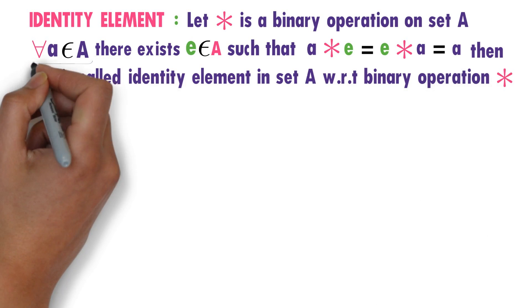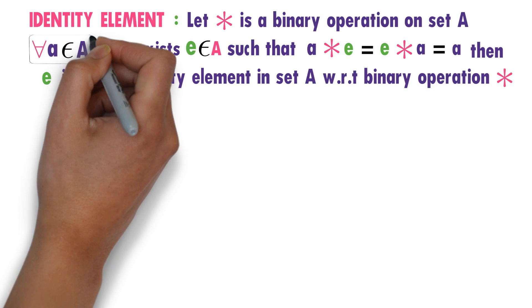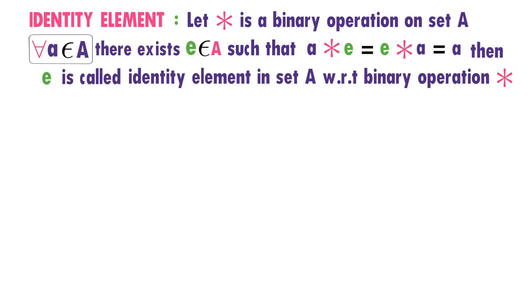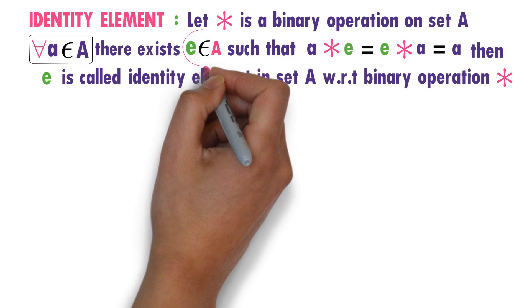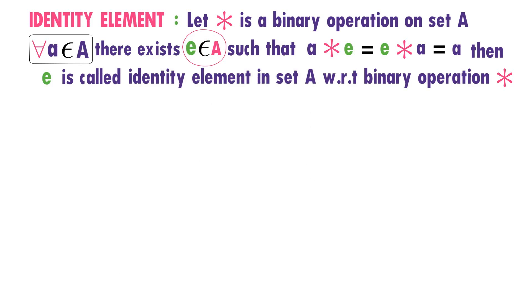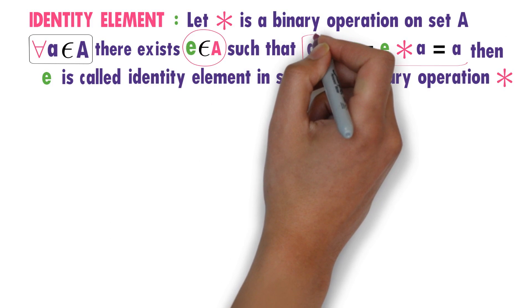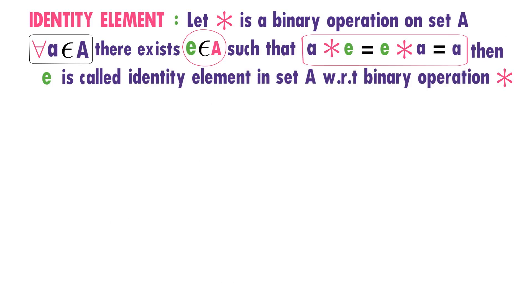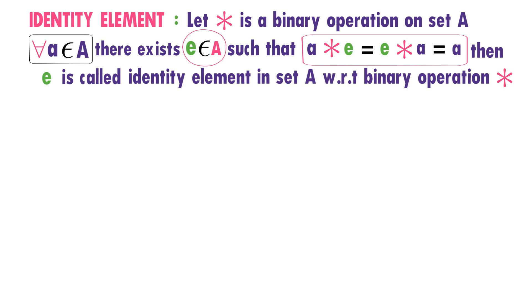I'll explain the main important points. For any A in set A, there exists an element E in set A such that A star E equals E star A equals A. Then E is called the identity element in set A with respect to binary operation star.